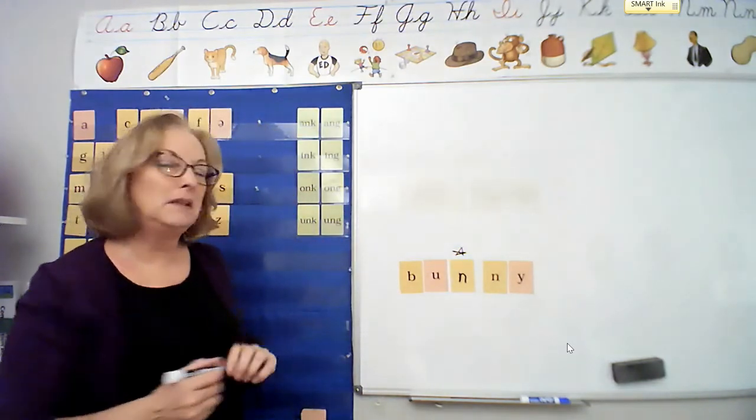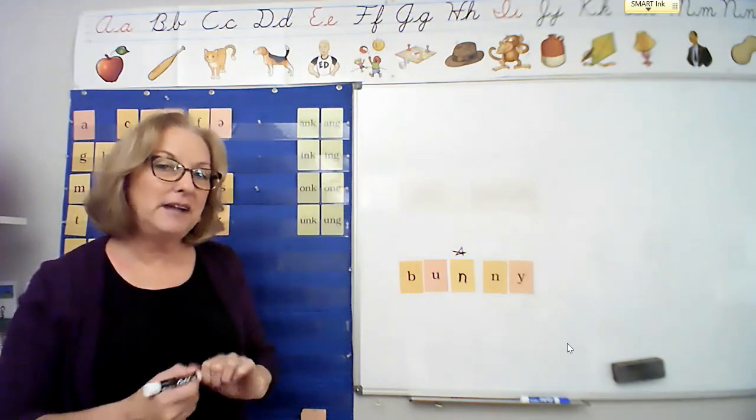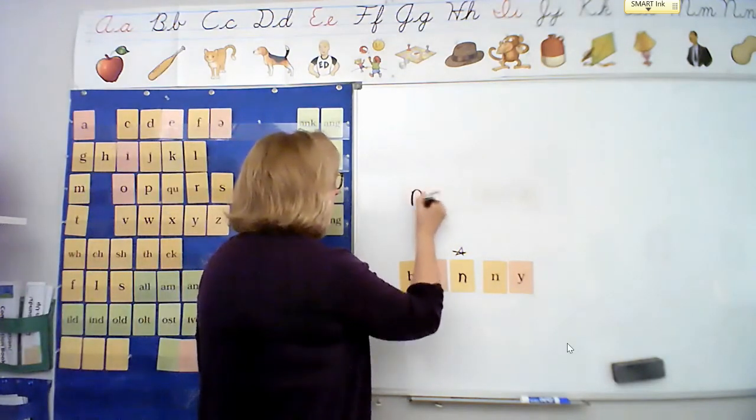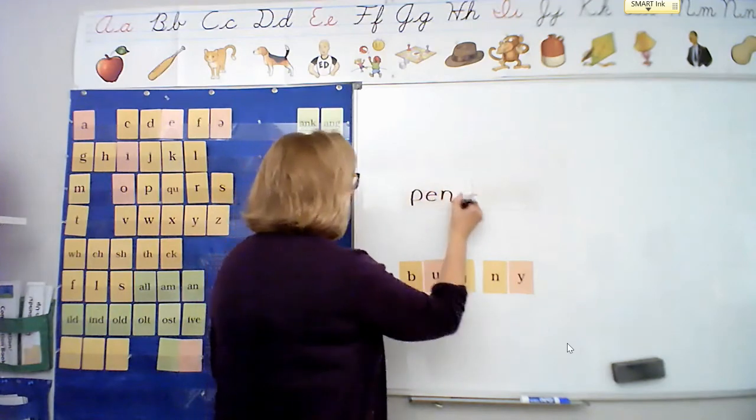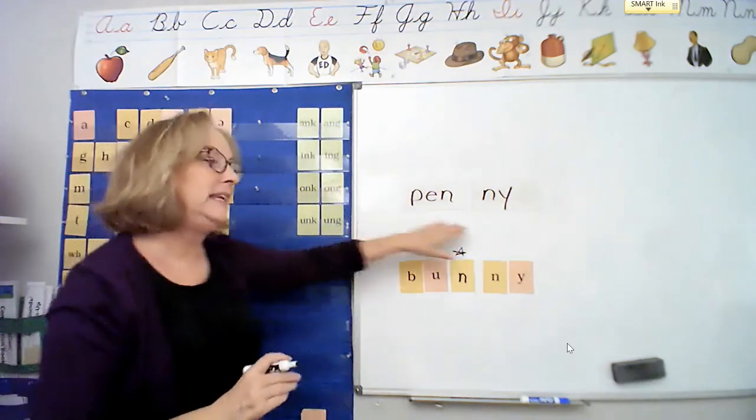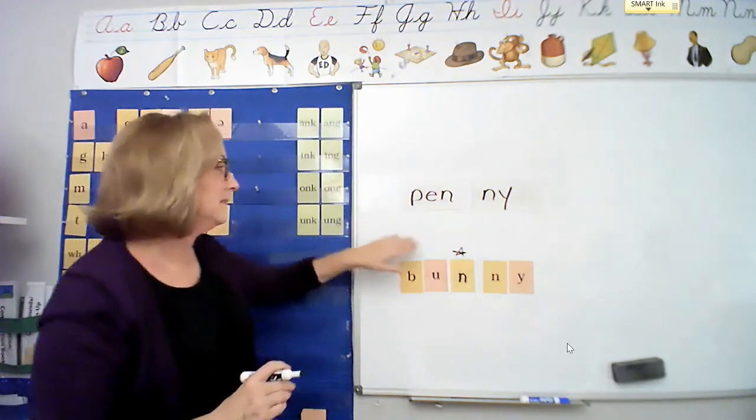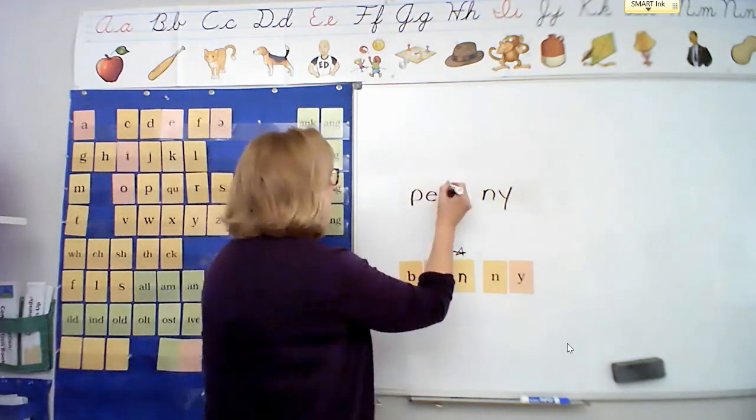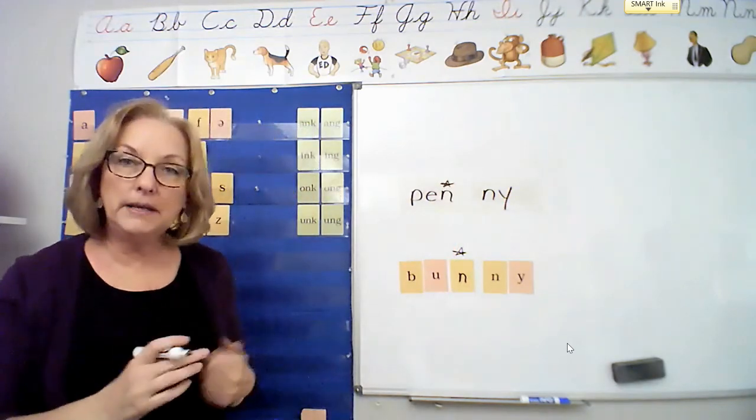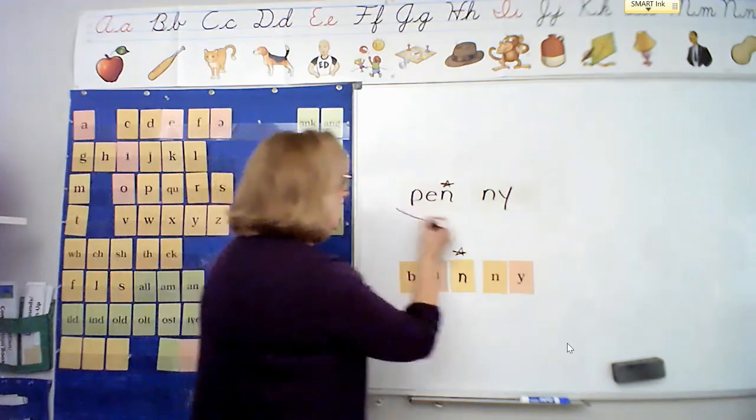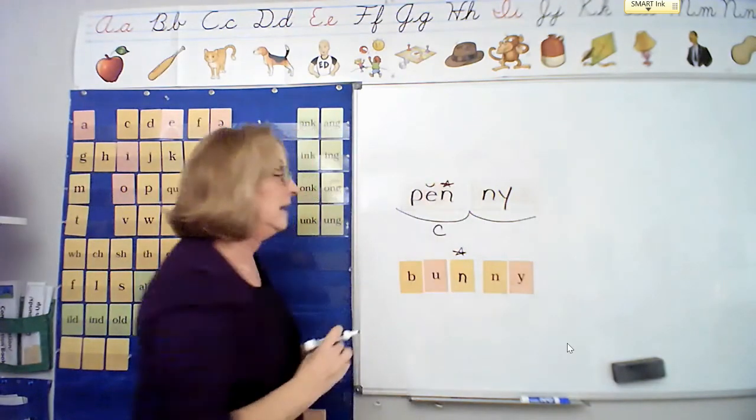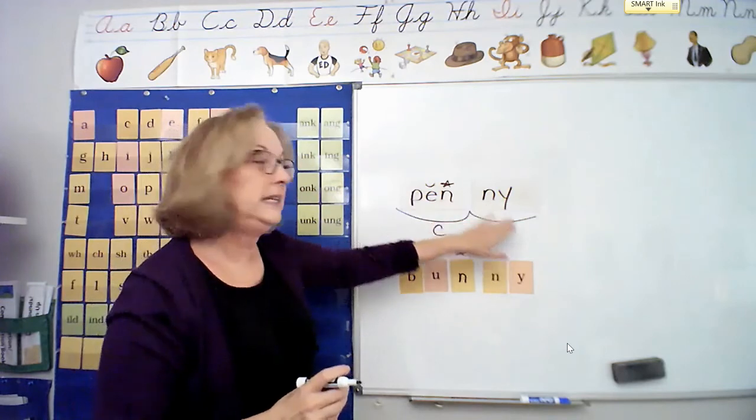Say penny, penny. Let's touch our frames and say it, penny. First syllable, penny. Do you hear that short vowel? Are you thinking you're going to have to put an extra consonant in there in order to close it in? Penny. So let's put a star above that extra n to show that we wanted to close in that first syllable, to make that first syllable closed and make our vowel short.